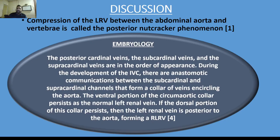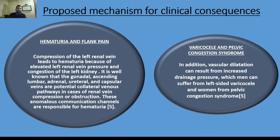Embryologically, the posterior cardinal veins, the subcardinal veins, and the supracardinal veins are in the order of appearance. During development of the inferior vena cava, anastomotic communications between the subcardinal and supracardinal channels form a collar of veins encircling the aorta. The ventral portion of this circumaortic collar persists as the normal left renal vein. If the dorsal portion persists, the left renal vein lies posterior to the aorta, forming a retroaortic left renal vein.